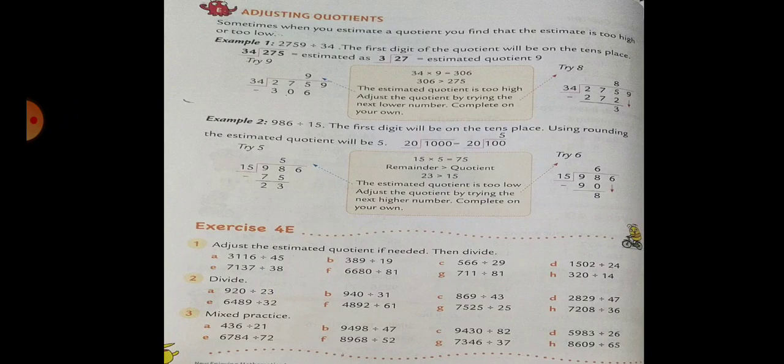34 times 8 are 272. 275 minus 272: 5 minus 2 is 3, 7 minus 7 is 0, 2 minus 2 is 0.